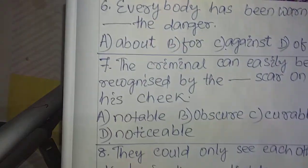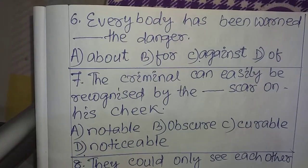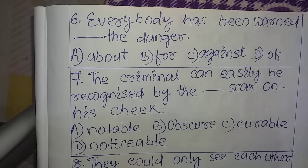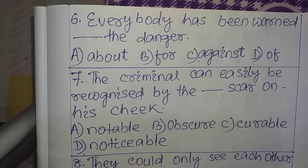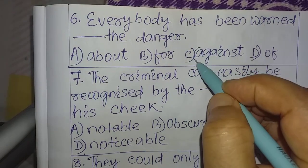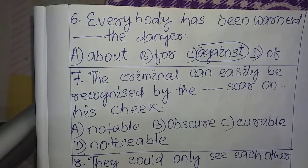Question number six: 'Everybody has been warned ___ .' Options: A) about, B) for, C) against, D) of. This question belongs to the preposition chapter of grammar. The correct answer is 'against' — everybody has been warned against danger. The appropriate preposition here is 'against'.